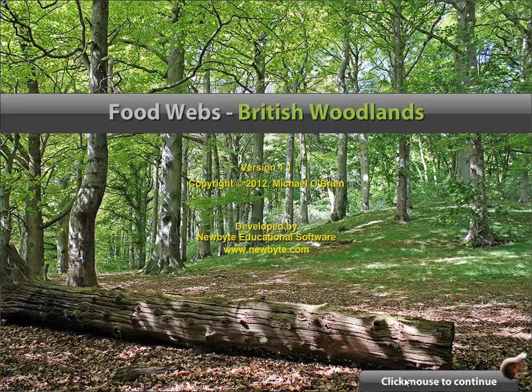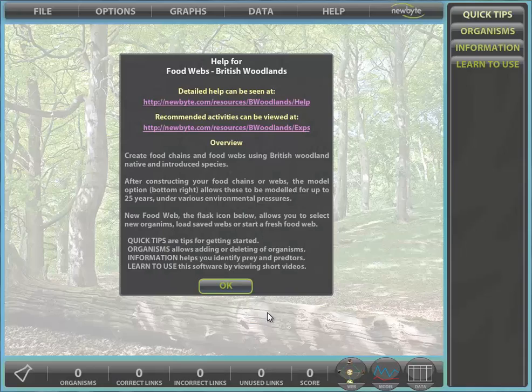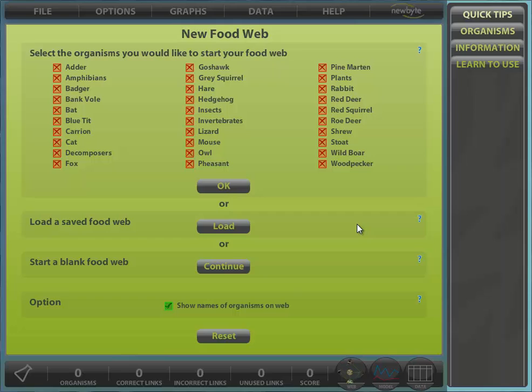After clicking through the title screen, we are presented with the new FoodWeb dialog. This can be accessed at any time from the file menu or the Flask icon at the bottom left.